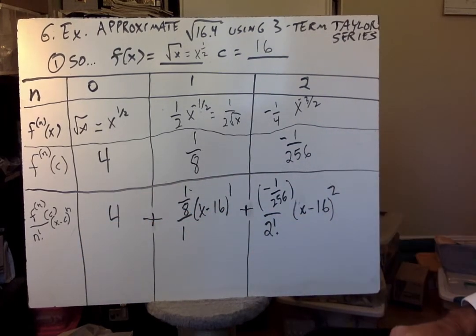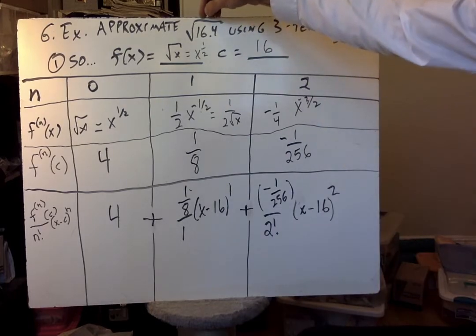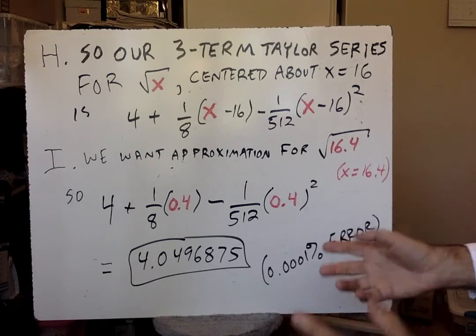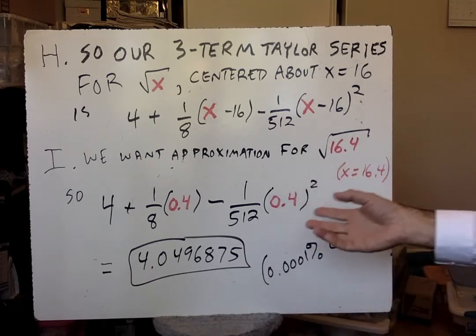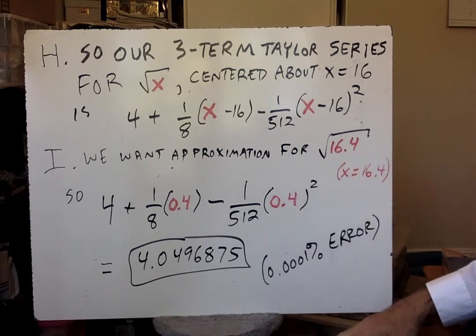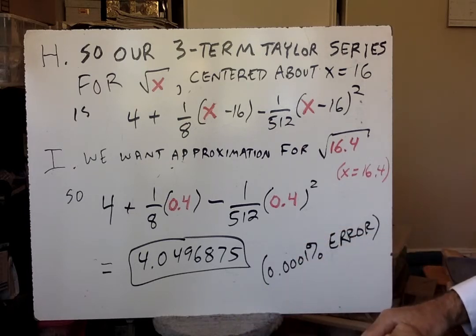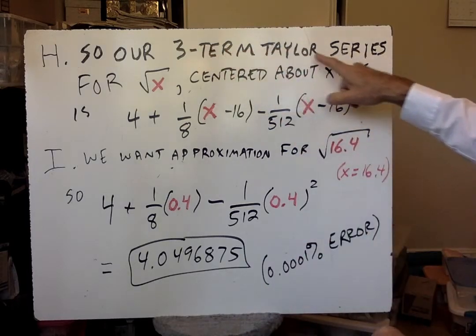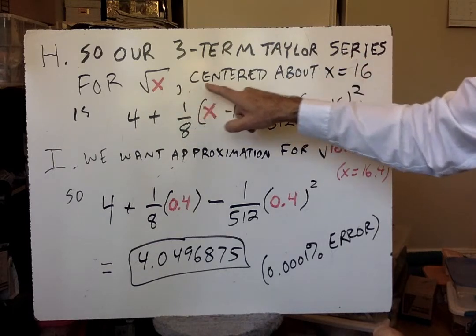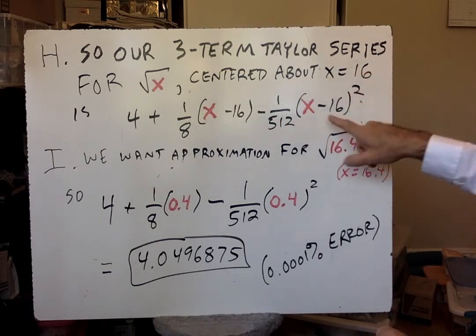And that gives me three terms, three non-zero terms. So that's what they wanted. So after the smoke clears, and you figured out the derivatives, and plugged in the values for c so that you get coefficients, and divide by n factorial, and so forth, our three-term Taylor series for the square root of x centered about x equals 16 is this.